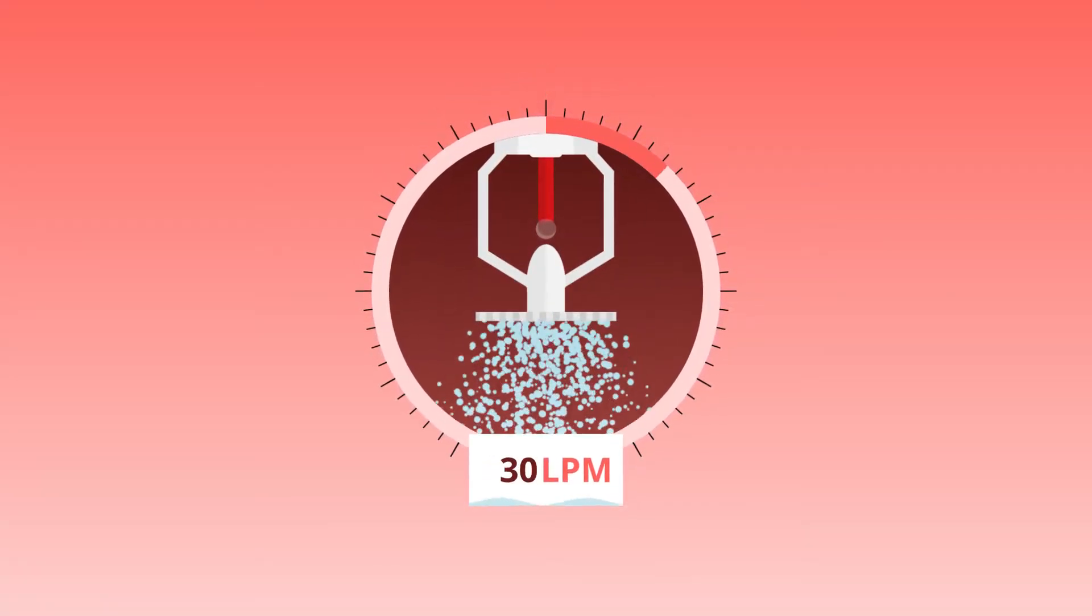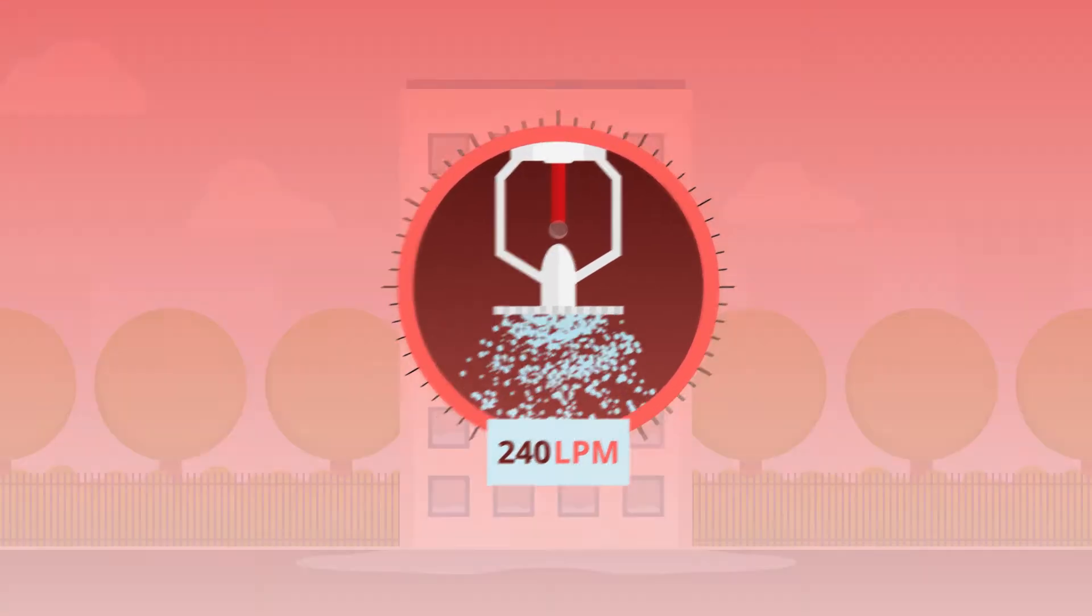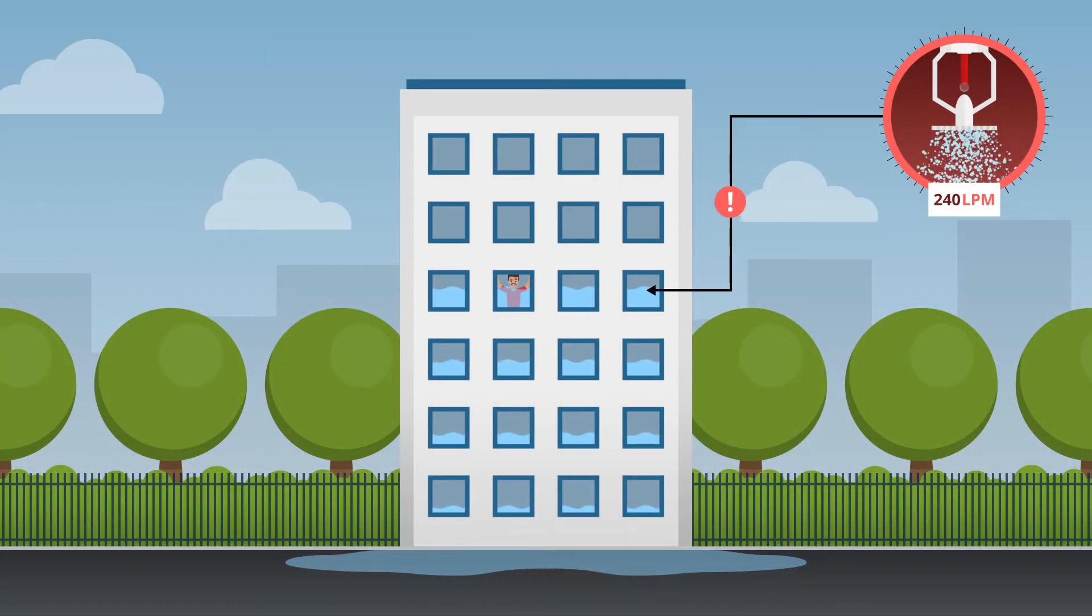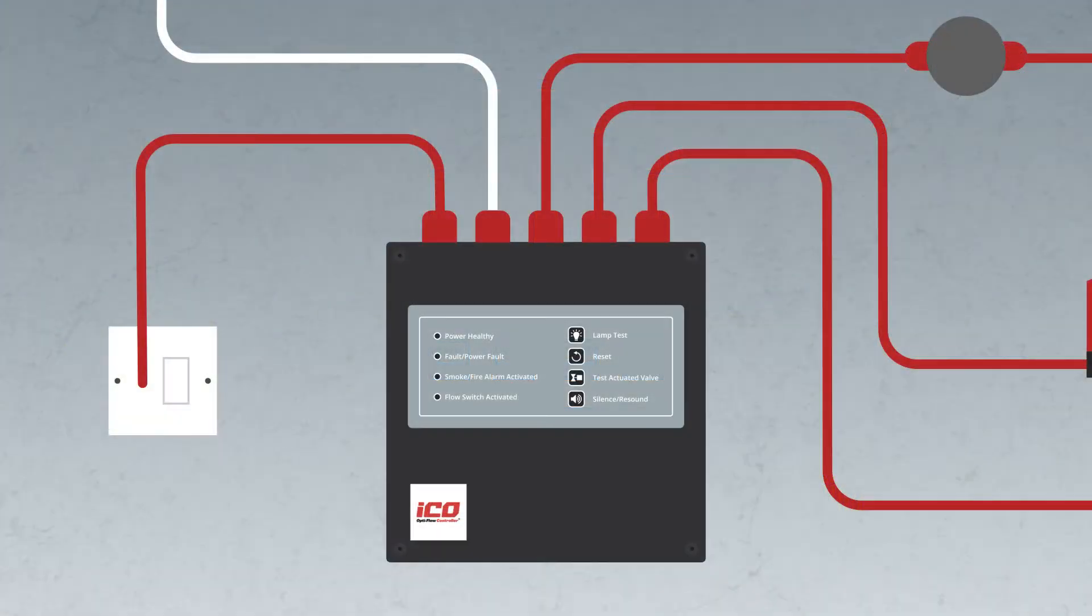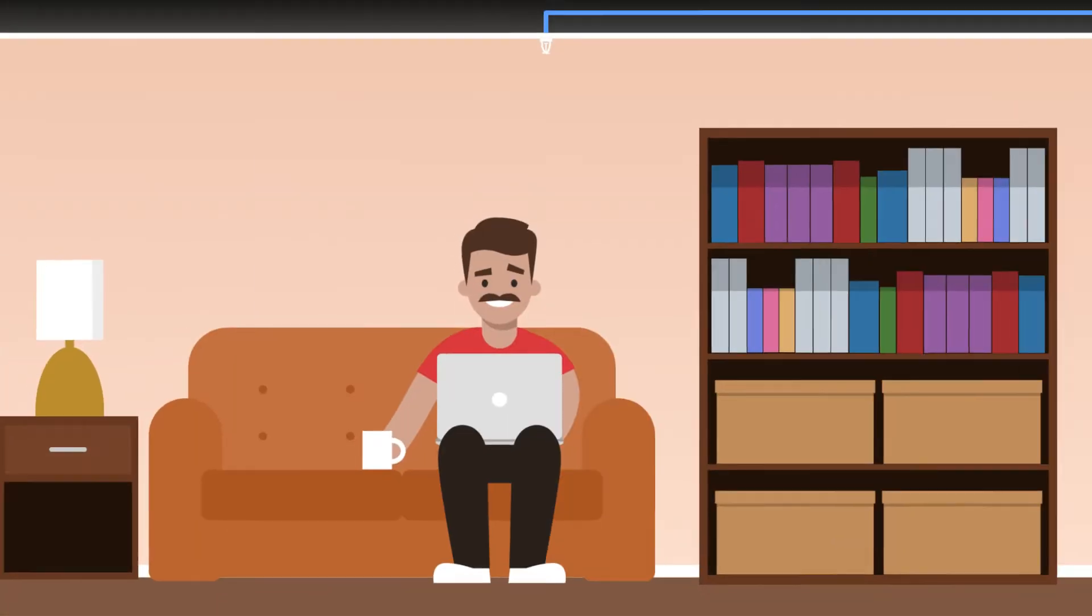Traditional residential sprinkler systems can produce flows of up to 240 litres per minute. This can be damaging not just for the property it's protecting but any surrounding properties. The ICO OptiFlow controller has been developed to offer additional protection and ultimate peace of mind.